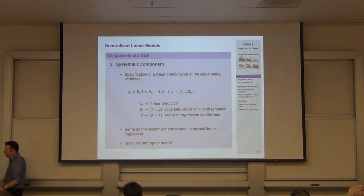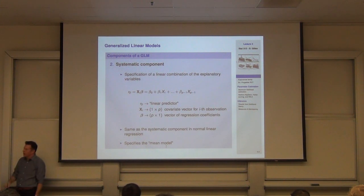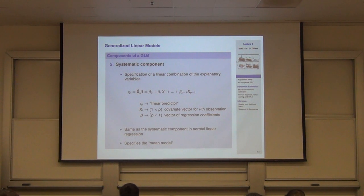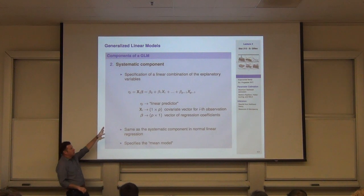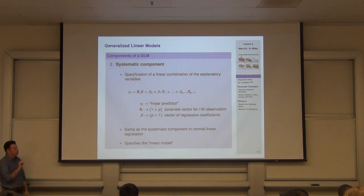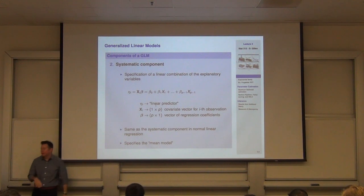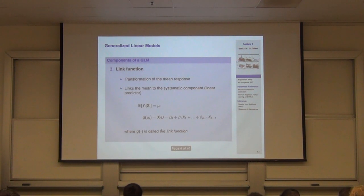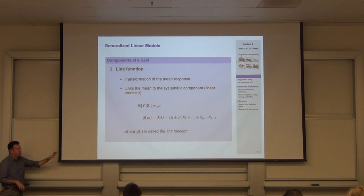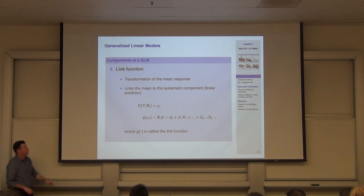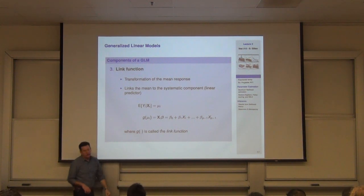Then we have the systematic component — what I usually call the mean model. It's the linear predictor inside the GLM: a function of the known covariates, my X's, and the unknown regression parameters, betas — the things I'm scientifically interested in estimating and doing inference upon. Going beyond the normal distribution, the difference from classic linear regression is that now we want to take that linear predictor and link it to the mean function through some transformation G, the link function.